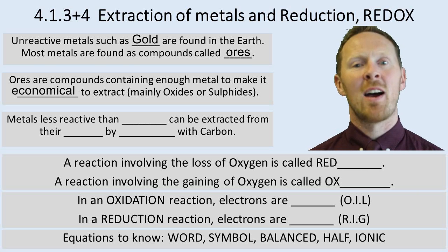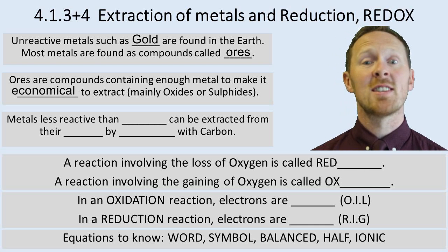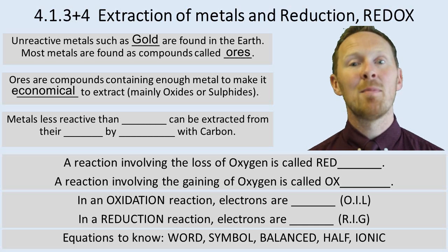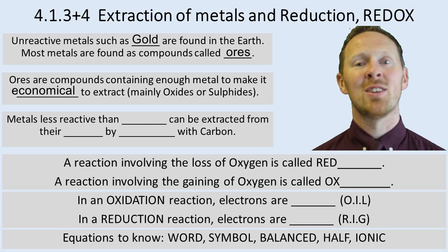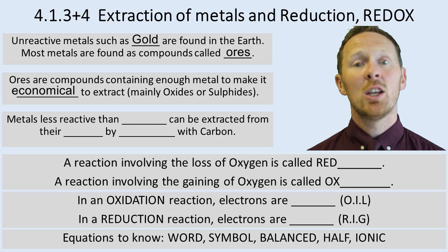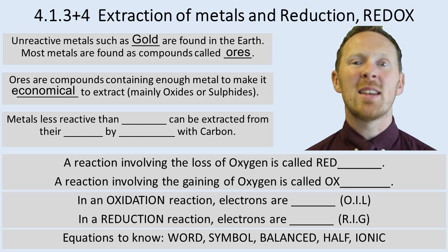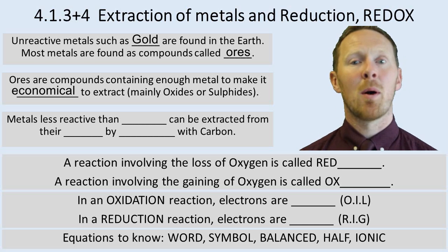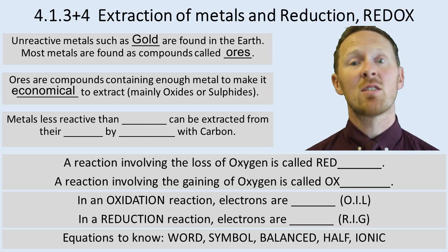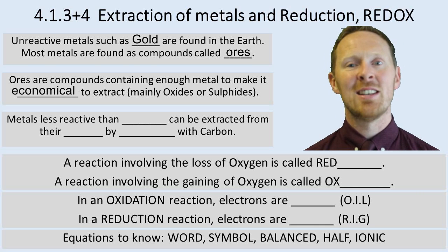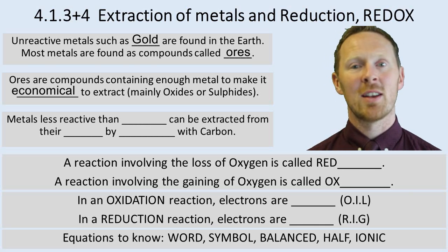Most metals are found as ores bonded with oxygen. For instance, iron ore, which is called hematite, is found as iron oxide. Aluminium ore, which is called bauxite, is known as aluminium oxide. You can also get metals bonded with sulphur, giving sulphides. These have an environmental problem because when you heat a metal sulphide, you get sulphur dioxide given off, which causes acid rain. Be aware of that as an environmental problem of extracting metals.